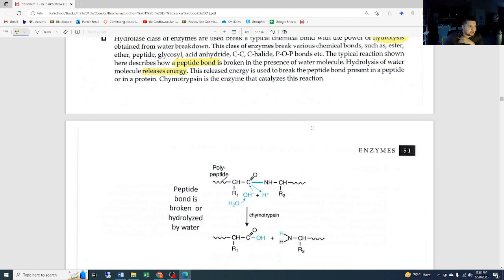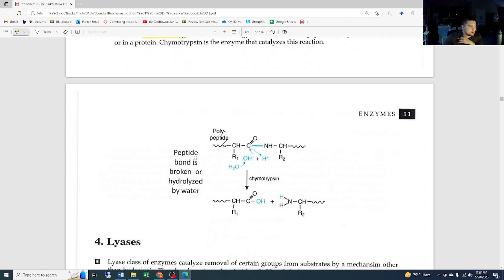This released energy is used to break the peptide bond present in a peptide or a protein. Chymotrypsin is the enzyme that catalyzes this reaction. We have the peptide bond right here, polypeptide. Water comes in. When water is broken, the OH and the H—this also releases energy, and that energy is able to break, using the energy of this being broken down, it's able to break that bond and separate them. Now we're looking at it: NH2 and COO minus—our carboxyl and our amine groups.